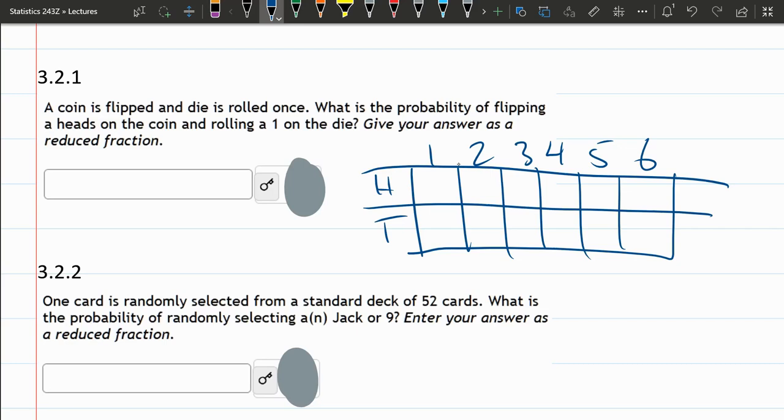So what's the probability of flipping a heads and rolling a 1? There's only one outcome that's favorable right there. So one favorable outcome, 12 total. 1 out of 12.